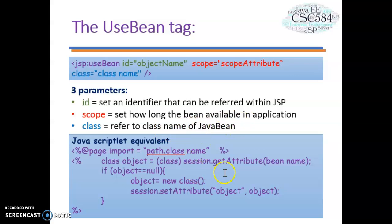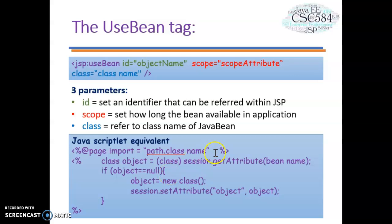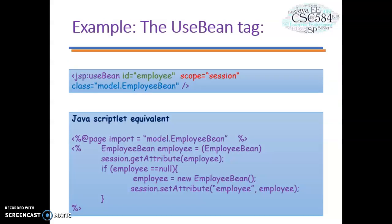Here I provide the JavaScript equivalent to the JSP useBean ID. Note that Java will use the existing object if the object is already available, and will instantiate a new object if the object is not available.